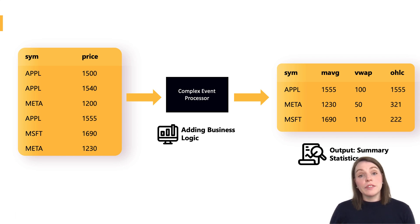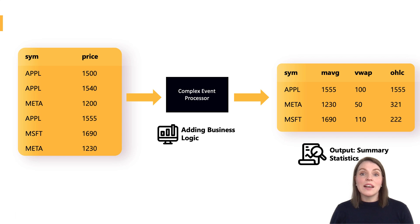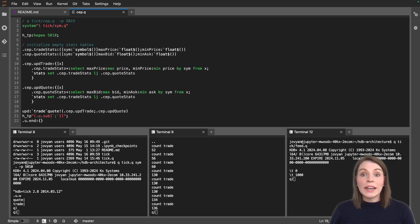Typical behaviour for a CEP might be when it receives data, it calculates some stats on the fly and updates a new stats table. That way, if a client wants to get stats about a specific table or data, they don't have to calculate them each time from the raw data — it's sitting there ready to be queried. As it's been done incrementally by the CEP as and when data comes in, their query time is a lot faster. So let's have a look at how we can add our own stats table.